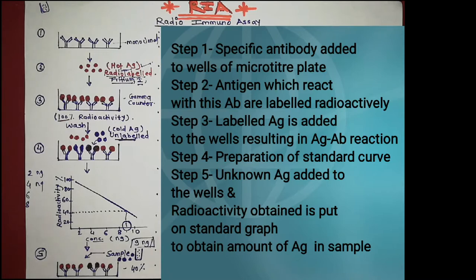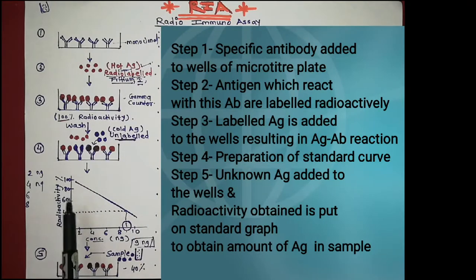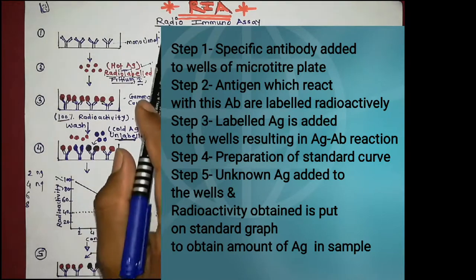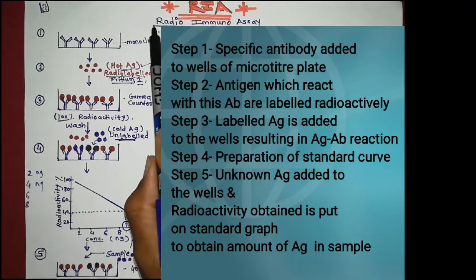So this is all about RIA. We make a standard antigen graph, add an unknown sample, plot the radioactivity, and find out the concentration of the unknown antigen. It is called 'Radio' because we use radioisotopes, 'Immuno' because it is related to antigen-antibody reactions. So it is a radio immunoassay — an assay for determining the concentration of an unknown antigen. Thank you so much.